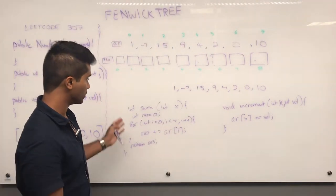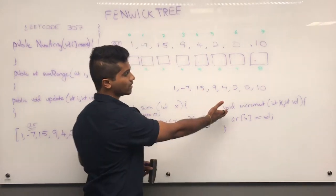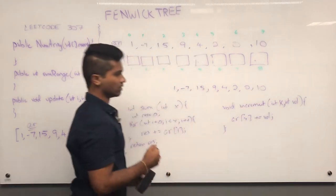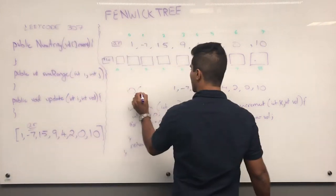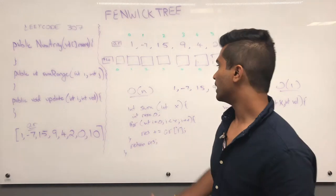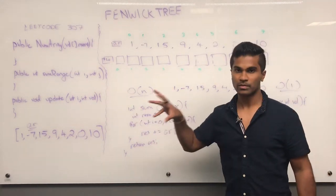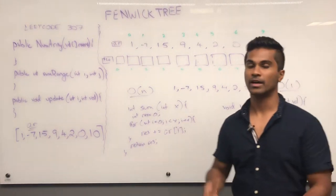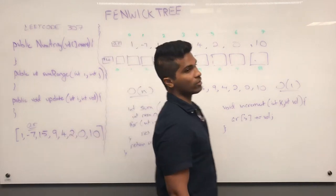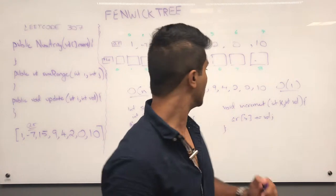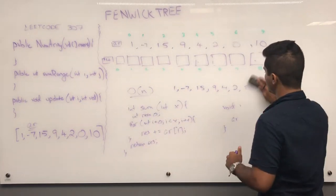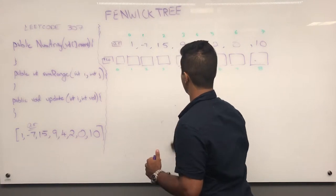We find the sum between the beginning and some index i, and we increment whatever value at a given index x by the argument val. The runtime for sum is O(n) and the runtime for increment is O(1), which is not really bad. However, if we want to constantly get the sum and also constantly increment it and the array is not going to be static, then we probably want to do better than O(n). That's where Fenwick Tree comes in.